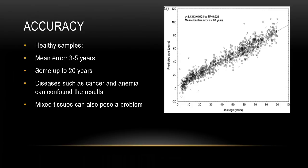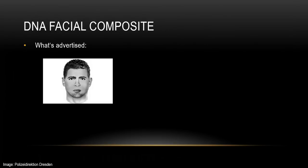Dabei können manche Krankheiten gefunden werden, zum Beispiel Krebs oder Anämie. Außerdem ist es ein Problem, weil das Ergebnis gewebeabhängig ist. Wenn man eine Vermischung von verschiedenen Geweben hat, kann das ungenauer werden.